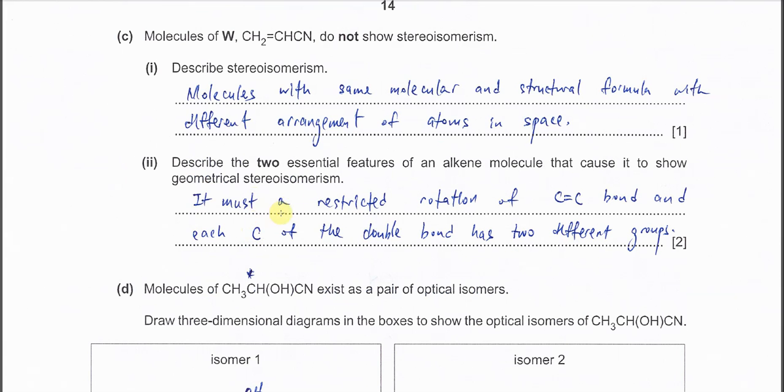Part (c): Molecules of W do not show stereoisomerism. Describe stereoisomerism. When you describe stereoisomerism, you must mention which is the same and which is different. The isomers must have the same molecular and structural formula. The difference is the arrangement of atoms in space.